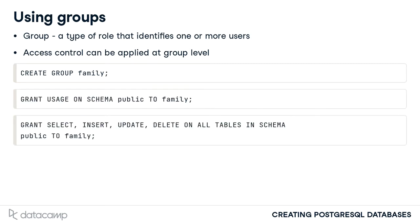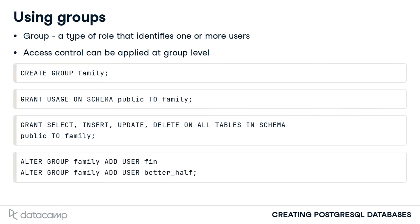The family group is given select, insert, update, and delete privileges on all tables in the public schema. Then individual user accounts can be added to the newly created group. Both fin and better_half are added to the family group. Alternatively, we can add both users to the family group using a single command in a comma-separated list of users. Using either approach, these users would then inherit the privileges from the group without the need to individually grant these privileges.